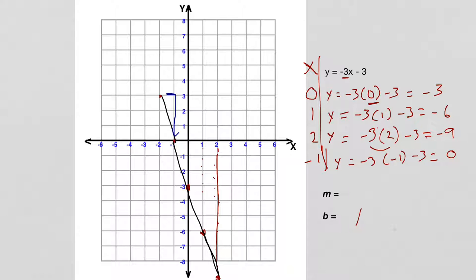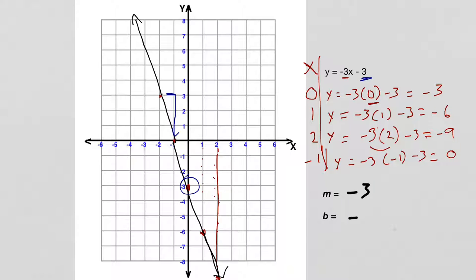If we extend the line — which I recommend doing whenever you're drawing a line — it's going to look something like this. And again, doing this by hand it's really important to use a straight edge. Now, where is the y-intercept? The y-intercept is right here — that's where the line intercepts the y-axis. It's at negative 3, and that fits with the formula: the minus 3. So the slope is negative 3 and the y-intercept is negative 3.